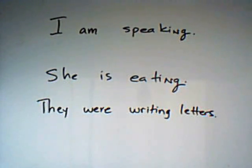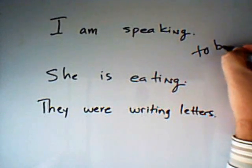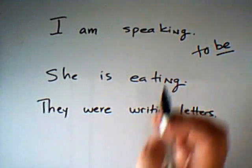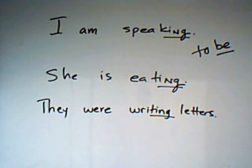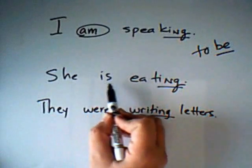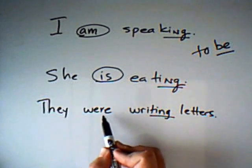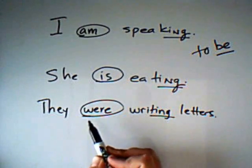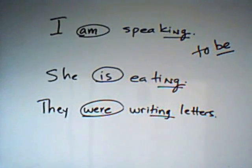On the whiteboard, what I have are three sentences in English that use compound tenses. In the examples here, the compound tenses are being formed with a form of the verb 'to be' and a present participle, which in English are the forms of verbs that end in -ing. So we have 'I am speaking' — compound form 'am' — 'she is eating,' the form of the verb 'to be' with the present participle 'eating,' and 'they were writing letters' in the past. And I'm going to show you how we could render all of these in Spanish. It's very similar.